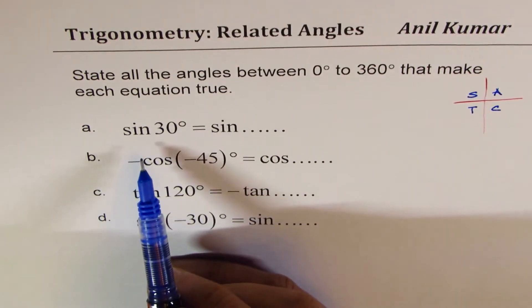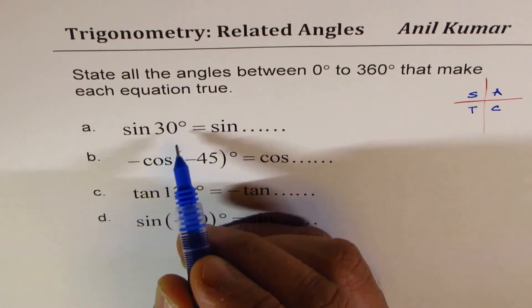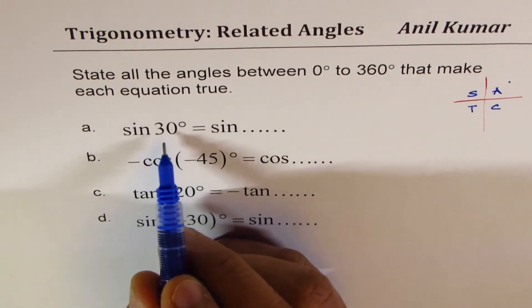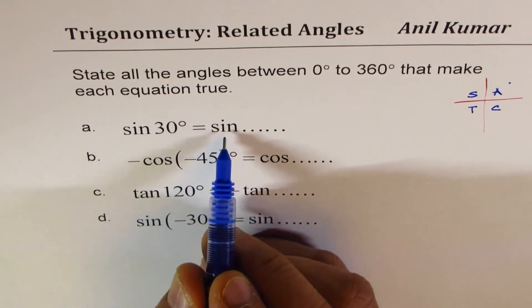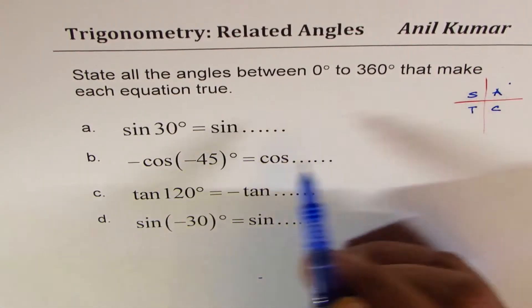Let's look into the first one. We are looking for sine 30 degrees. Now sine 30 degrees is in quadrant 1, so it is positive. Where else is sine positive? It is positive in quadrant 2 also.